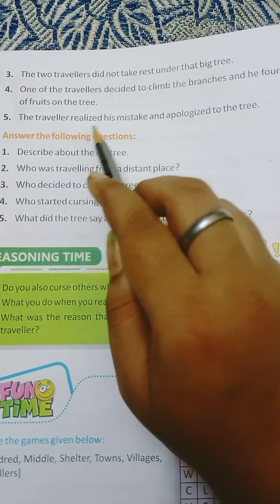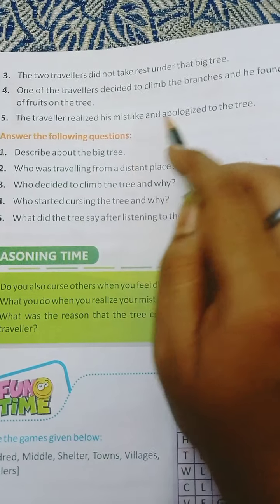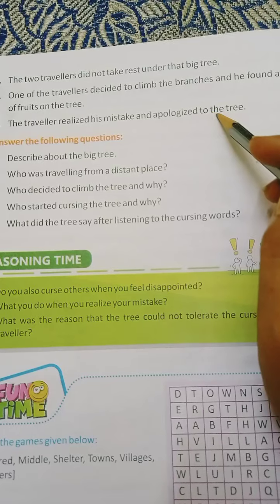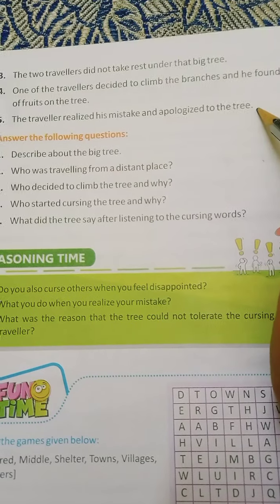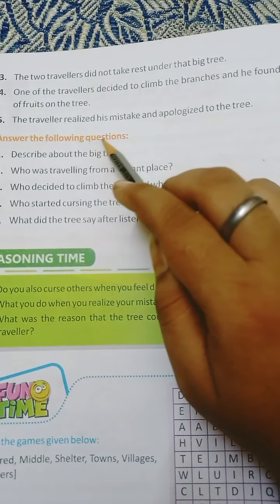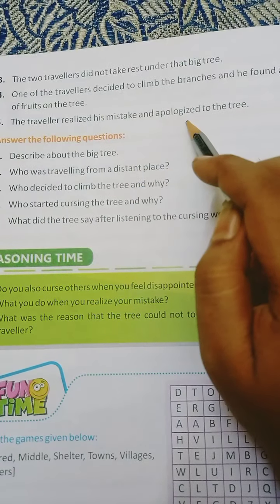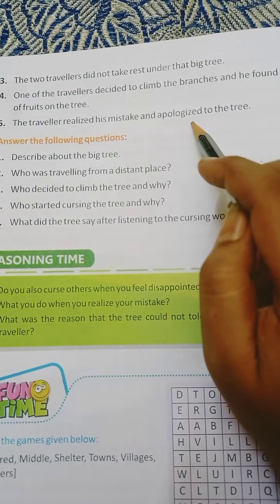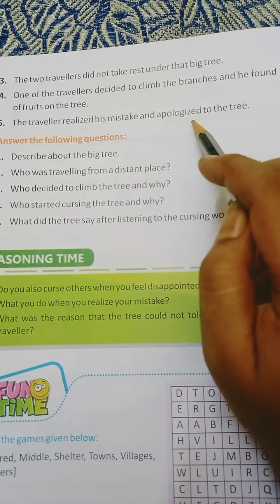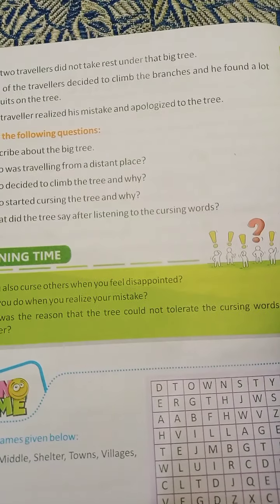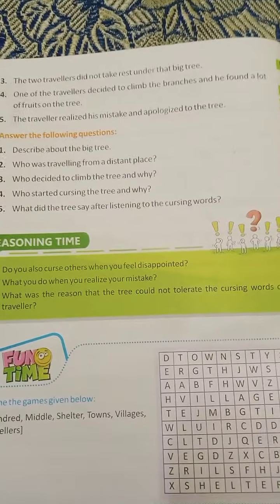Number five: the traveler realized his mistake and apologized to the tree.